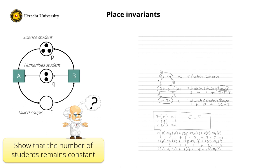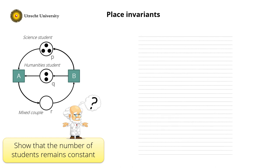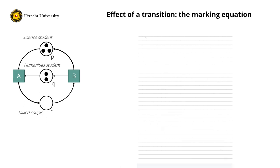But how can we check this more efficiently without calculating the reachability graph every time? For this we need to dive into Petri net theory. Let's revisit the firing rule, applying it for transition A. The firing rule says that for all places p, the new number of tokens M′(p) equals the old number, minus the tokens transition A removes from the place, plus the tokens transition A adds to that place.